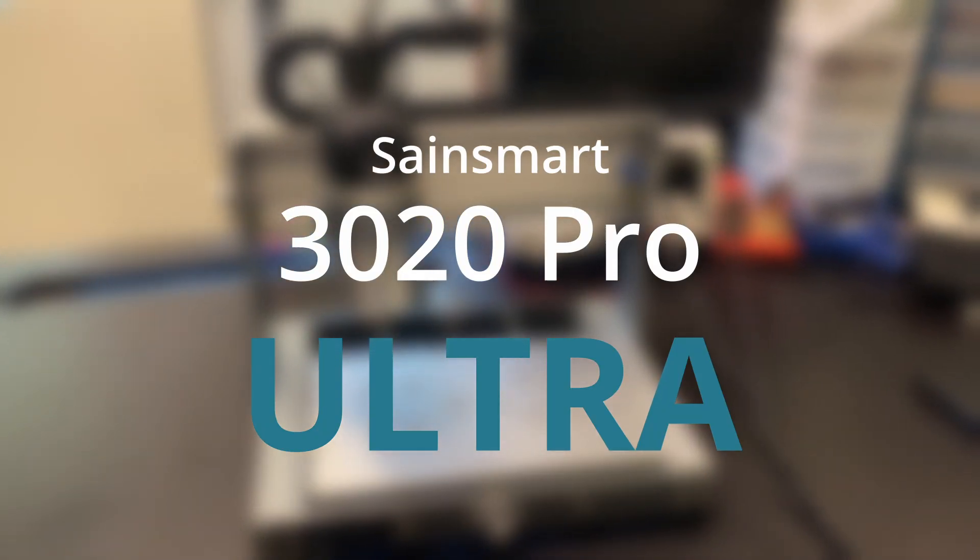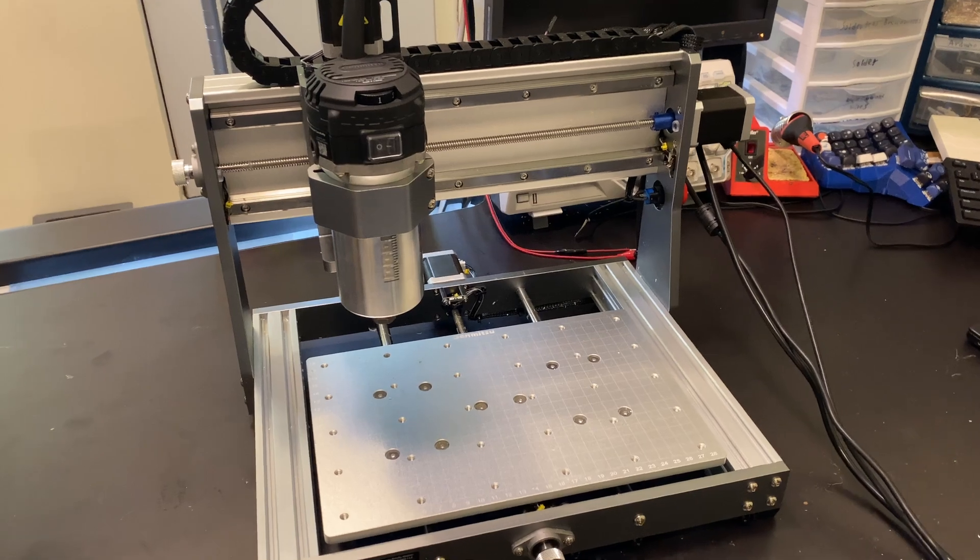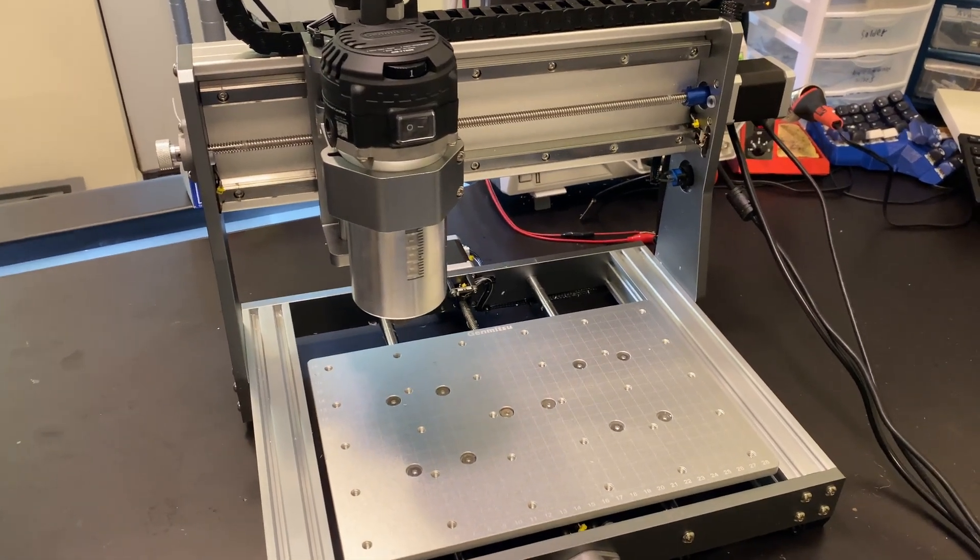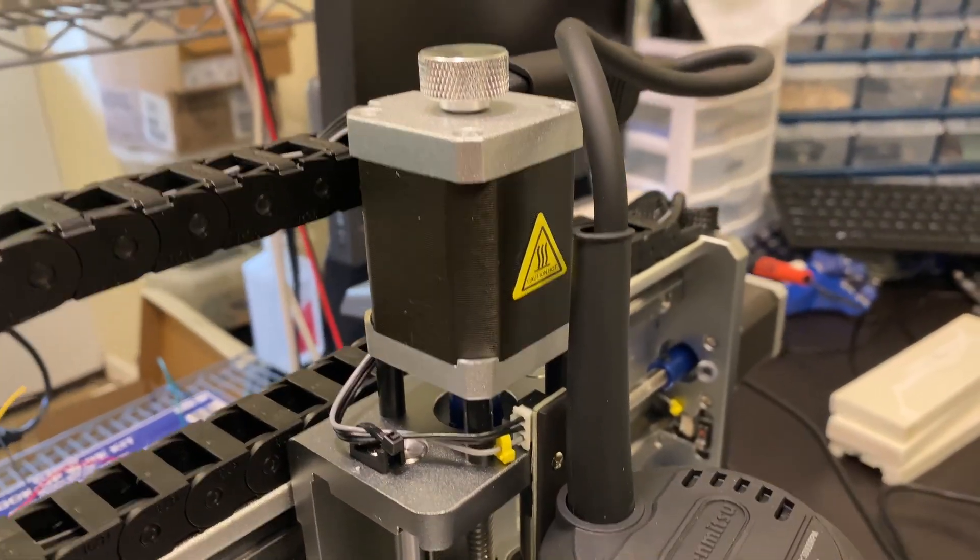Today we're reviewing the 3020 Pro Ultra from Sainsmart. This CNC router retains the classic 30x20cm machining area form factor, but comes with a heavily upgraded spindle motor and more powerful X, Y, and Z motors.